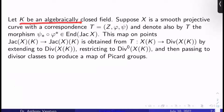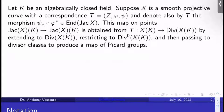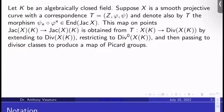Let k be an algebraically closed field, and let x be a smooth projective curve equipped with a correspondence T given by (Z, φ, ψ). I'm also going to denote by T the morphism ψ_* ∘ φ* from last video. That's an endomorphism of the Jacobian of X. If you haven't seen that last video, go ahead and watch that. What is this as a map on points? It's a map on points from the k-points of the Jacobian of X to itself, obtained by taking the correspondence T, which we know is a map from the k-points of X to its divisor group.